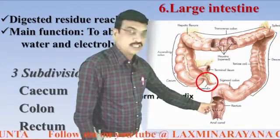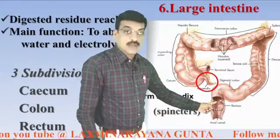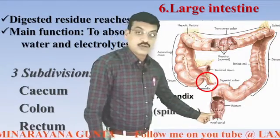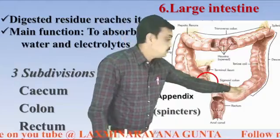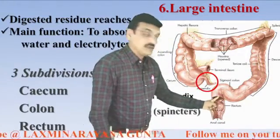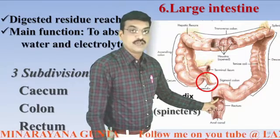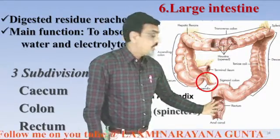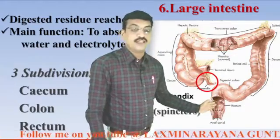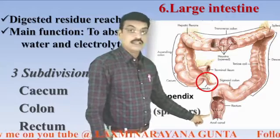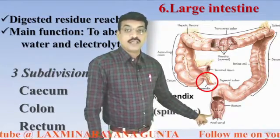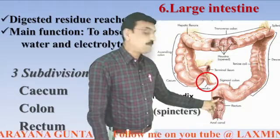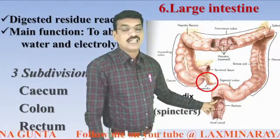Coming to the rectum — it has two sphincters: the upper sphincter and the lower sphincter. The upper sphincter is involuntary; whenever the digested residue reaches here, it opens automatically, not under our conscious control, causing feces to accumulate in the chamber. As the chamber fills, we feel the urge to expel. The lower sphincter then opens, and its opening and closing is under our conscious control — that's why it is called a voluntary sphincter.